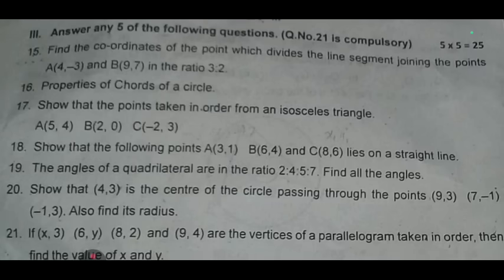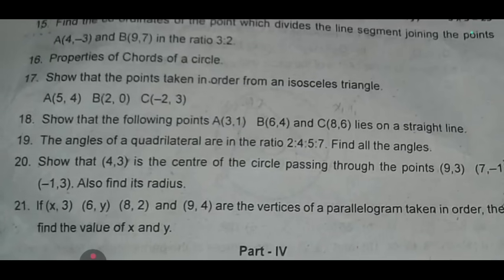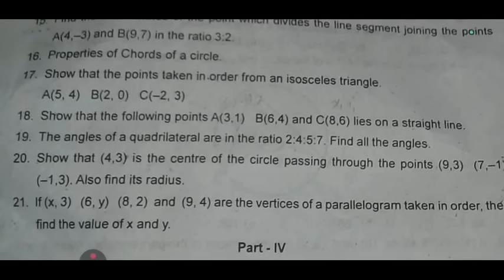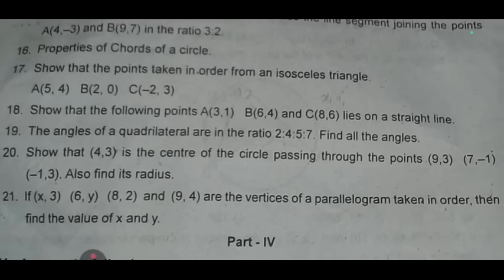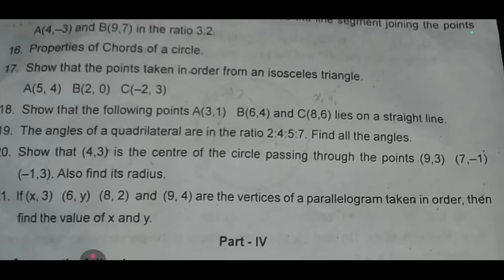Twentieth: show that (4, -3) is the center of a circle passing through the points (9, 3), (7, -1), (-1, 3), also find its radius. Twenty-first: if (x, 3), (6, y), (8, 2) and (9, 4) are the vertices of a parallelogram taken in order, then find the value of x and y.